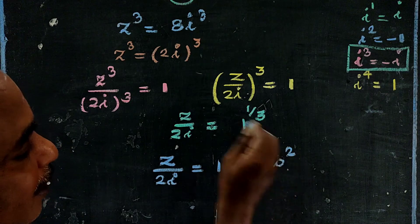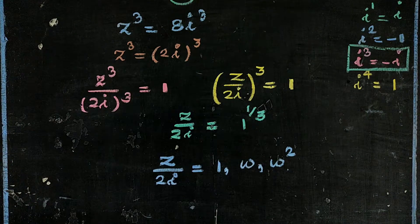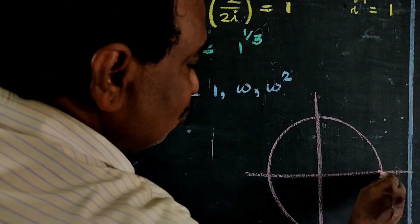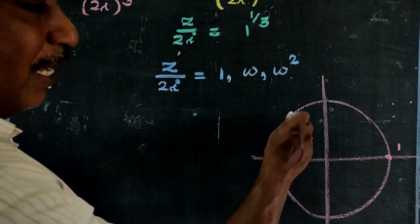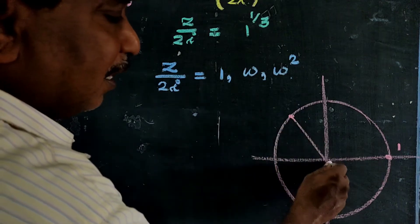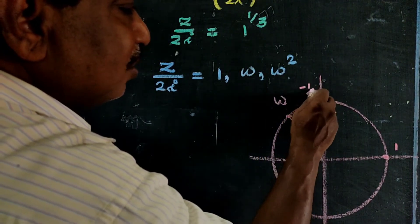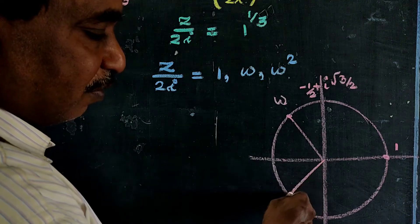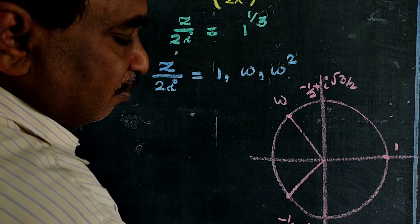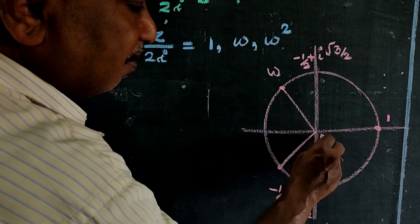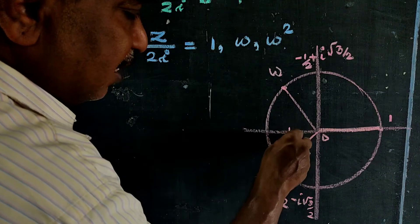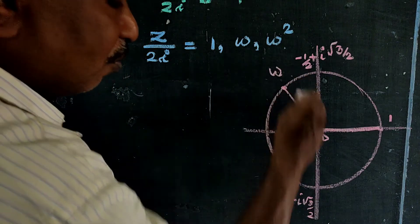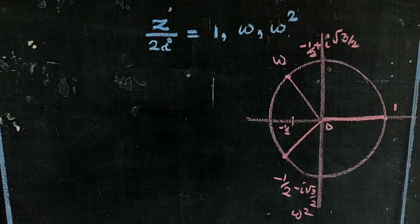Omega square — cube root of unity is equal to 1, omega, omega square. Omega is equal to 1 on the unit circle. At 0 degrees the value is 1. Omega is at 120 degrees, with value minus 1 by 2 plus i root 3 by 2. Omega square is at 240 degrees, with value minus 1 by 2 minus i root 3 by 2.